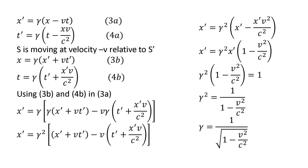Using equations 3b and 4b in equation 3a and simplifying, we get gamma squared as a common factor. This further simplifies to X prime equals gamma²·X prime·(1 minus V²/C²). Taking gamma²·X prime as a common factor and dividing both sides by X prime, we get gamma²·(1 minus V²/C²) equals 1, so gamma² equals 1 divided by (1 minus V²/C²). Taking the square root on both sides, gamma equals 1 divided by the square root of (1 minus V²/C²).